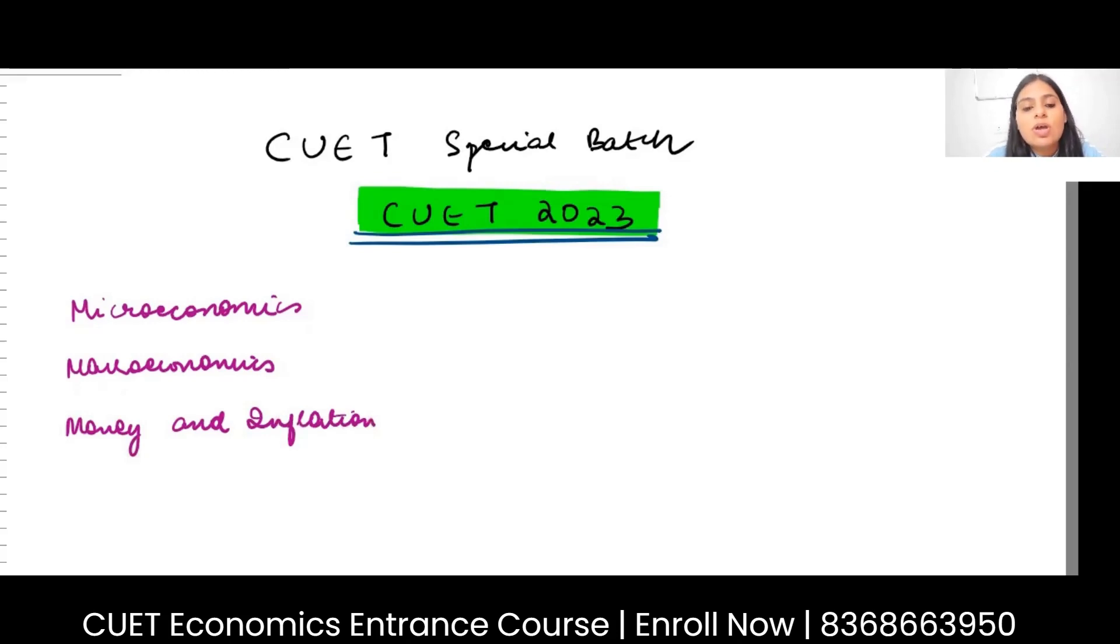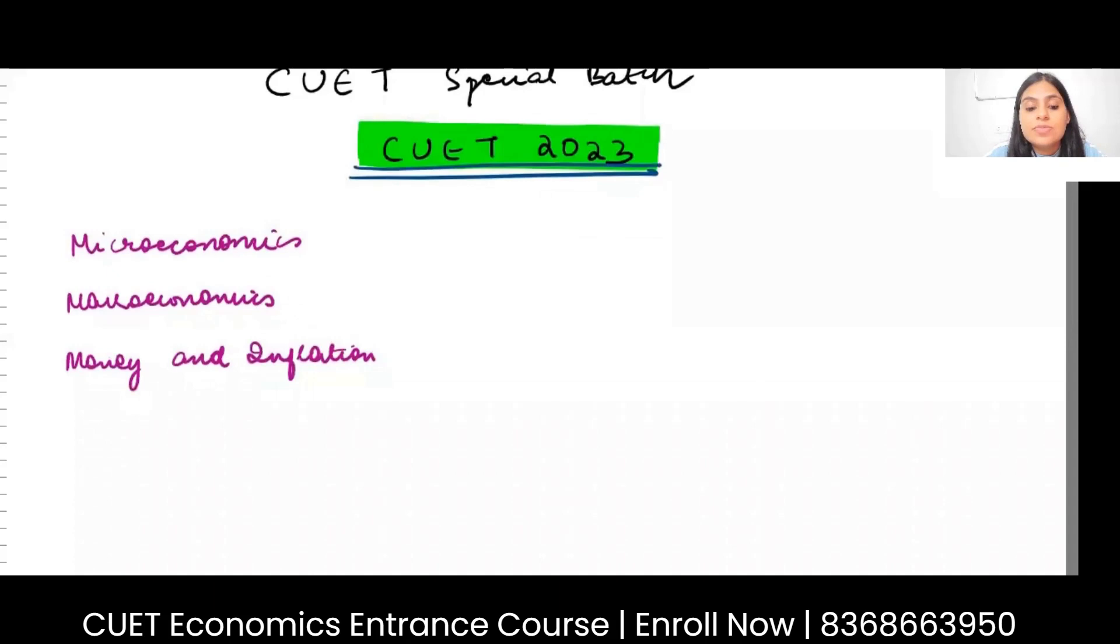This is a separate topic altogether. In this we will be talking about the demand and supply of money, the money multiplier, credit creation, the role of reserves, commercial banks, Phillips curve, etc.